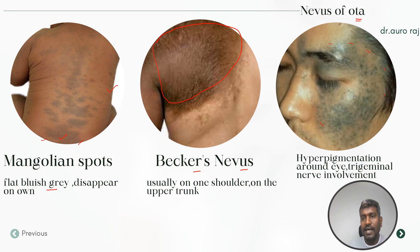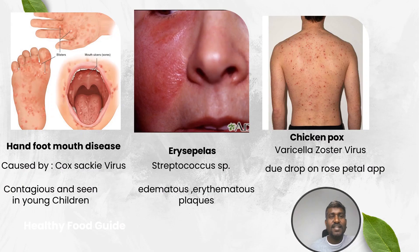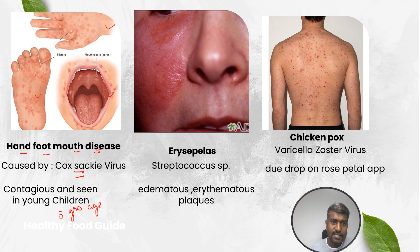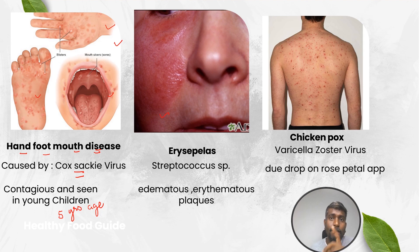Look at the legends — this is hand, foot, and mouth disease. It is caused by Coxsackievirus, is highly contagious, and commonly seen in young children around five years of age. The second image is erysipelas, caused by beta-hemolytic Streptococcus A, presenting with edematous and erythematous plaques.